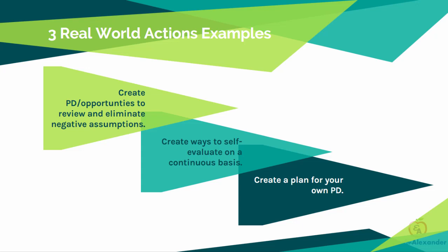Three things you can do today for Standard 5: First, create PD opportunities to review and eliminate negative assumptions — get PD about cultures, about building relationships with students, examining our assumptions about poverty or high-income students, bringing those assumptions to the forefront to eliminate them. Second, create ways to self-evaluate on a continuous basis: record yourself, notice how you relate to students, do self-journaling, do surveying to get feedback so you can improve. Third, create a plan for your own professional development — you also need to continuously learn.